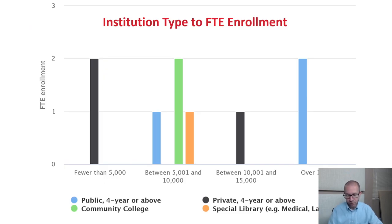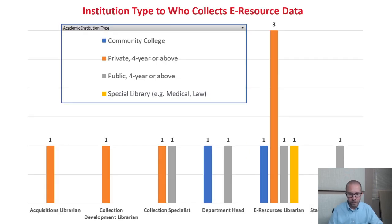Respondents came from a variety of institutions — community colleges, small private universities, large four-year public universities, and special libraries such as medical and law — serving populations ranging from fewer than 5,000 to over 15,000 FTE. Respondents were asked who collects usage data for e-resources. Interestingly, it's not just e-resource librarians, but those who oversee collections, acquisitions librarians, department heads, and in one case a staff member. Some reported data can come from more than one librarian. What wasn't asked but would be interesting for future study is what training librarians had and whether their roles influenced what kinds of data they collected.